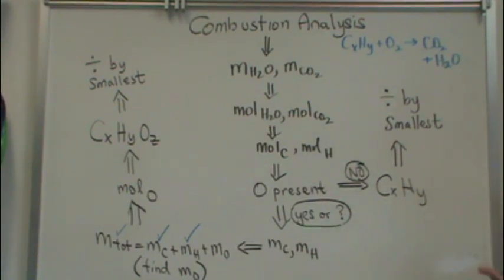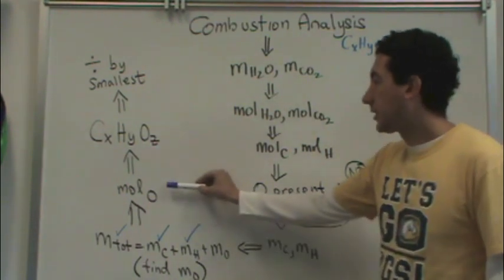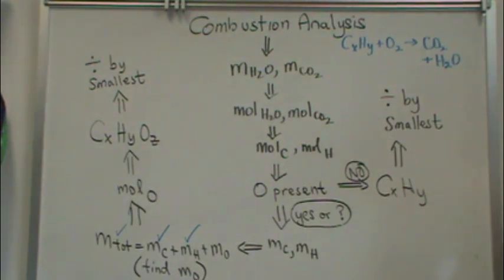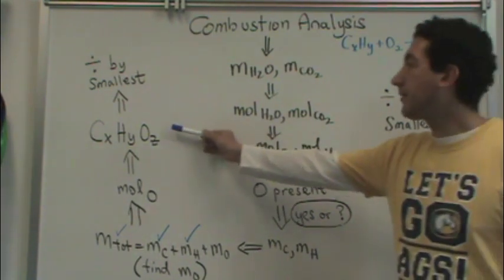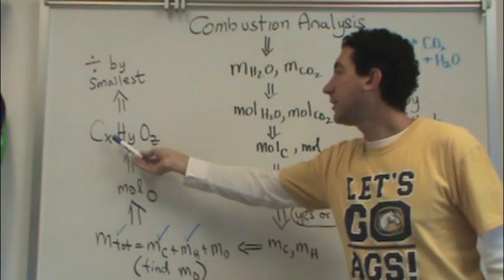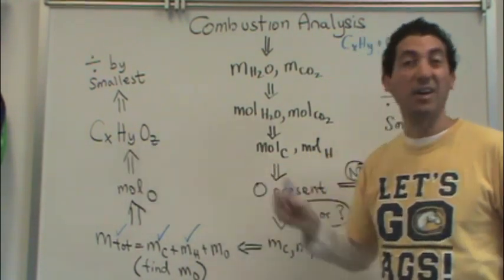After that, you want to convert to the moles of oxygen. So you're going to convert to the moles of oxygen, just use the atomic mass in the periodic table, 15.99 grams per mole. And now, here's what you have. You have this empirical formula, because there's carbon, hydrogen, and oxygen.